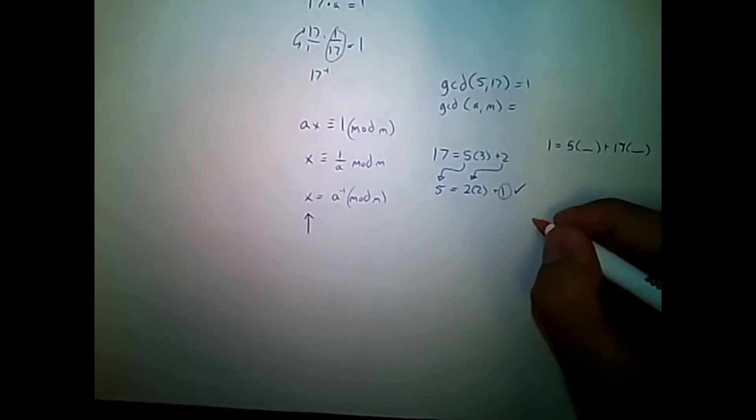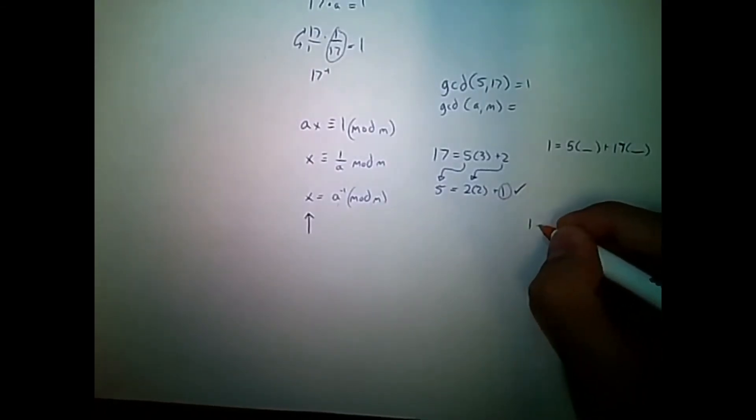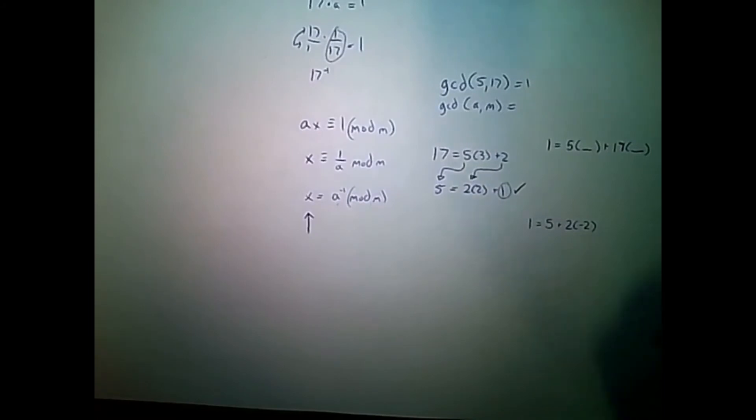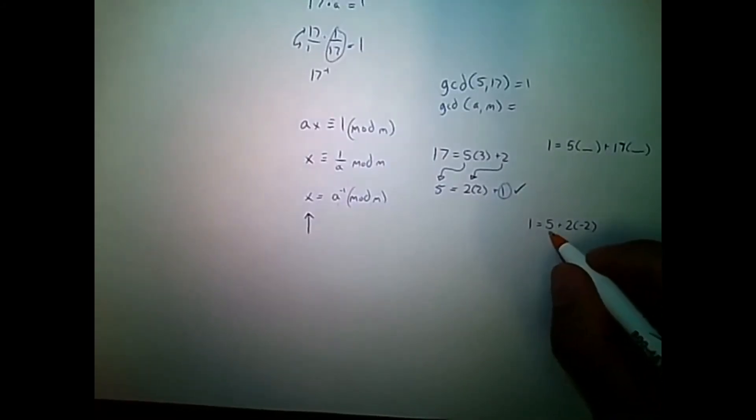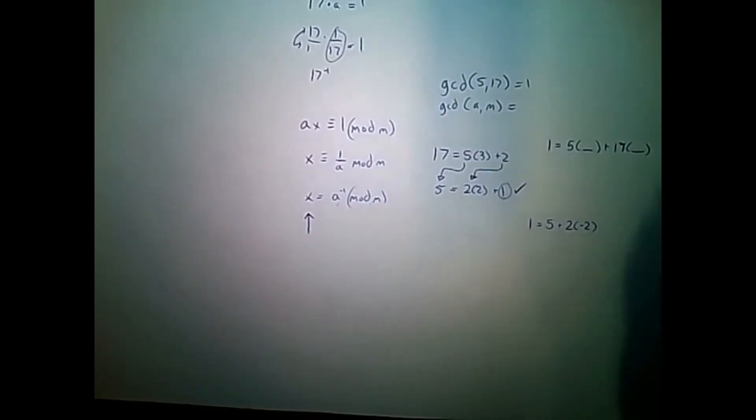Starting with 1, we're going to transform this equation. 1 is equal to 5 plus 2 times negative 2. So, we can verify this works. 5 plus 2 times negative 2 is negative 4. And that indeed equals 1.